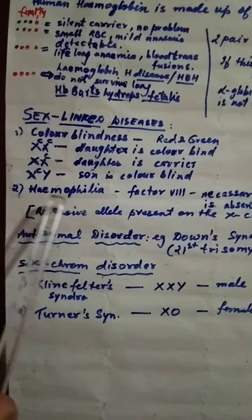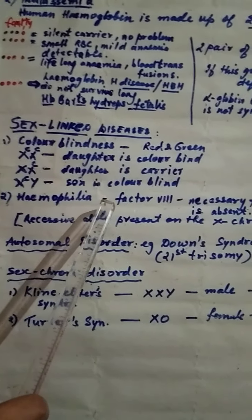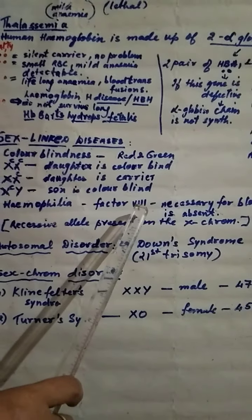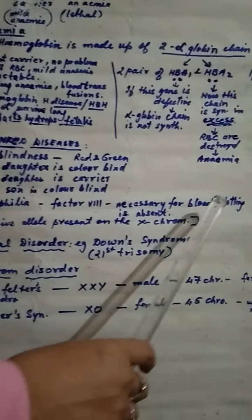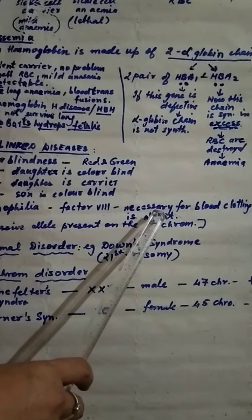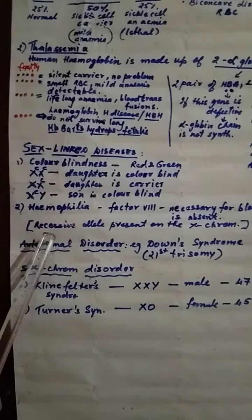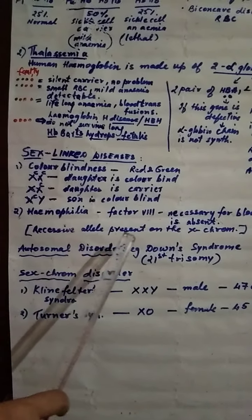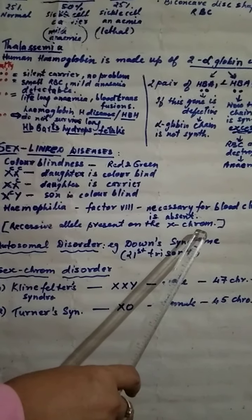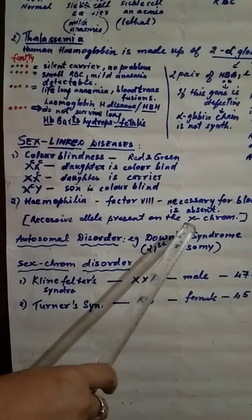Next disease is hemophilia. In hemophilia, factor VIII which is necessary for blood clotting is absent. This is recessive allele present on the X chromosome.